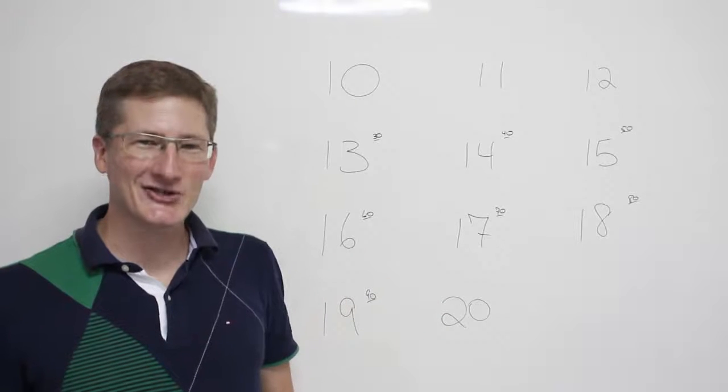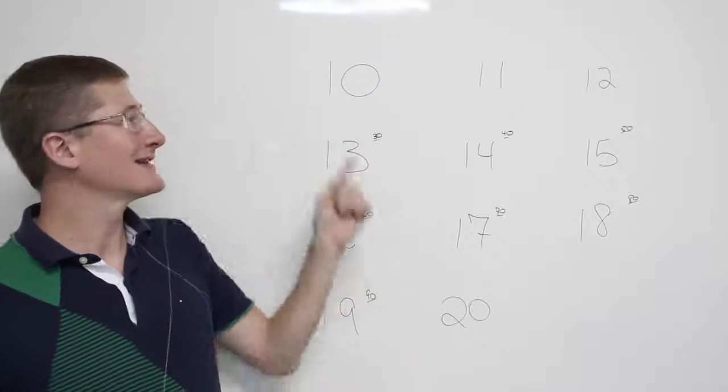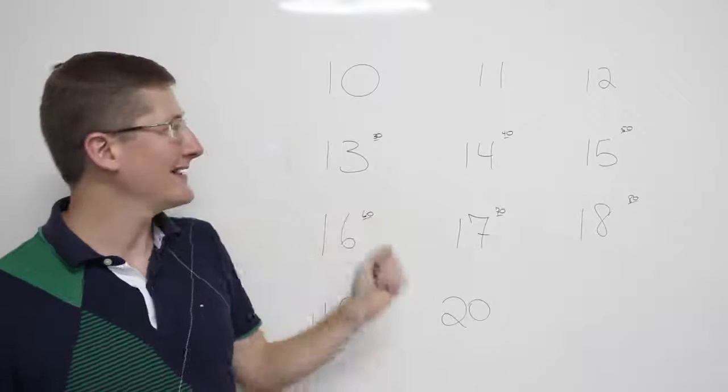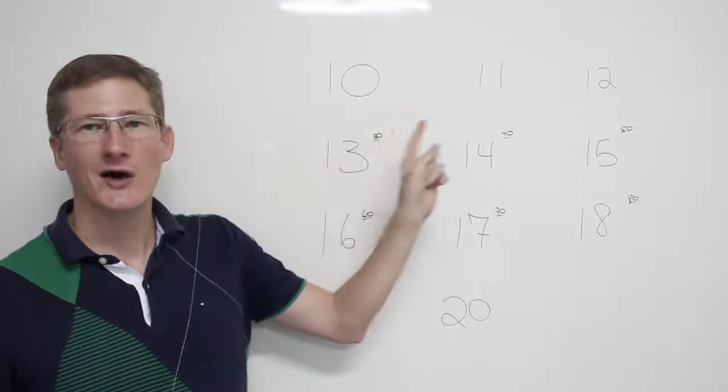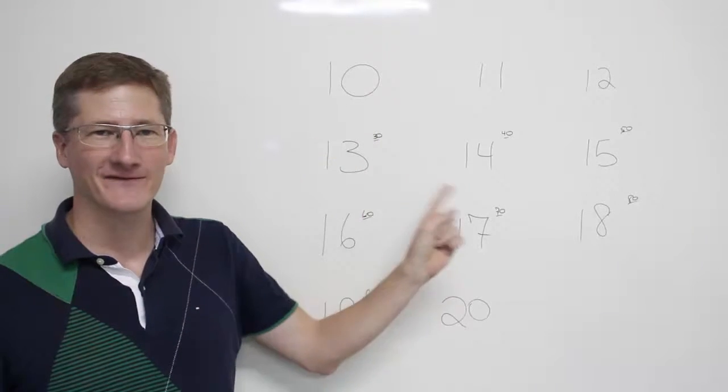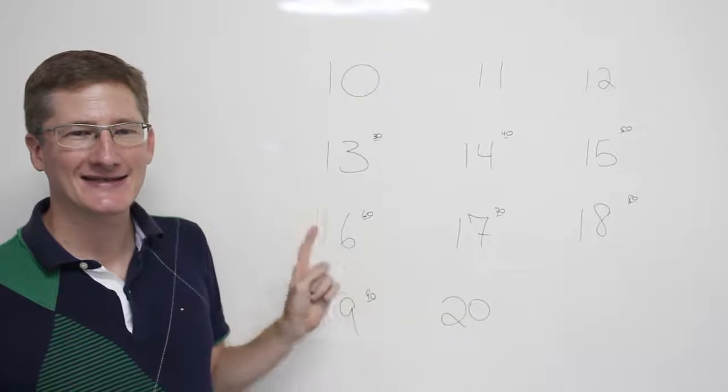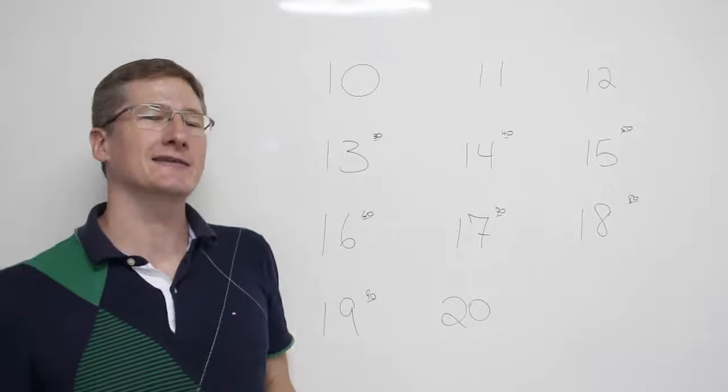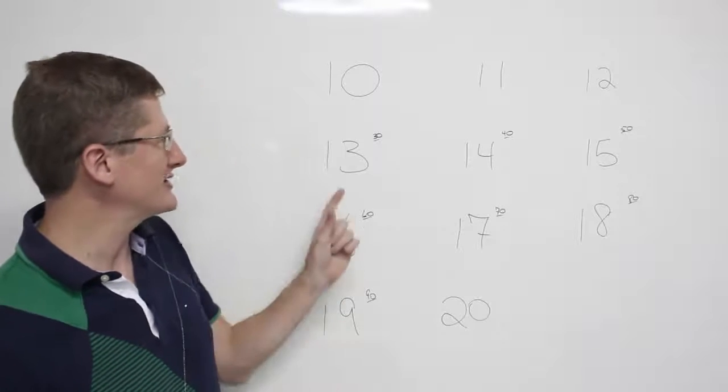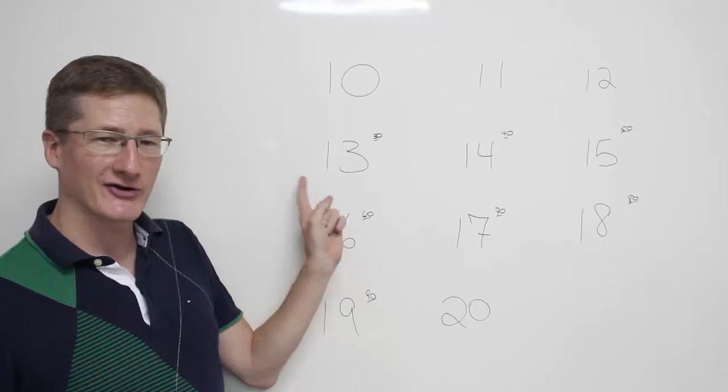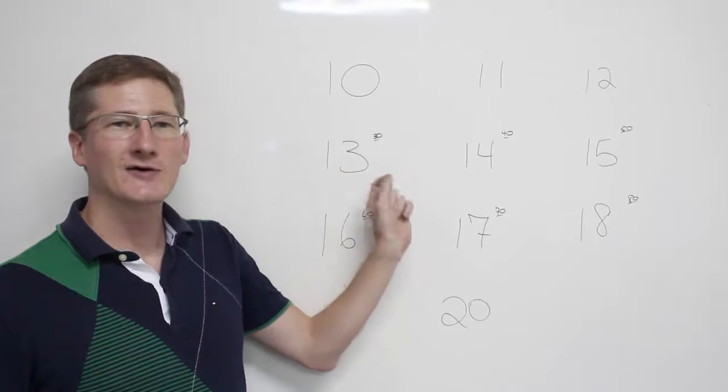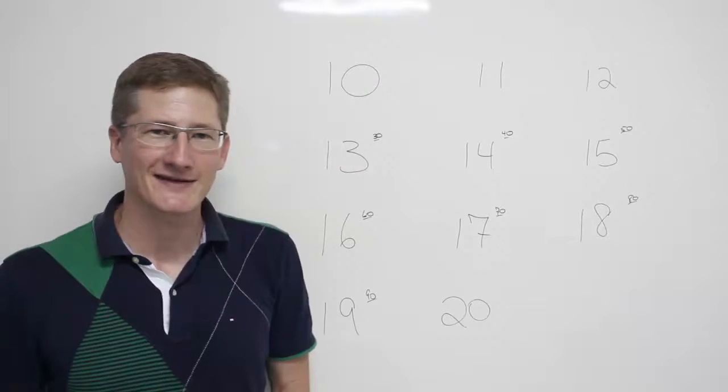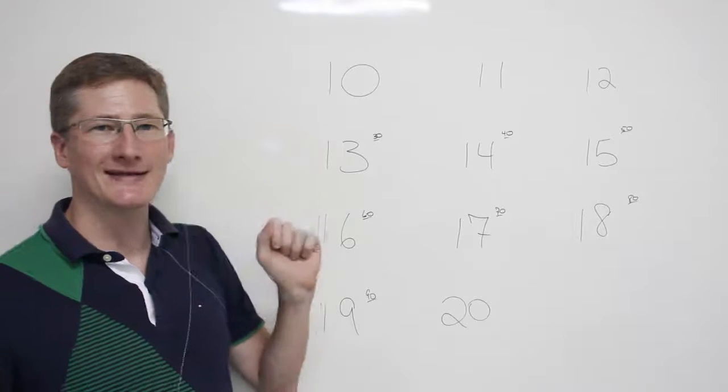Hey there English students, in this video we're going to look at the numbers 10 through 20: 10, 11, 12, 13, 14, 15, 16, 17, 18, 19, and 20. This will help you practice your pronunciation and differentiate between numbers like 13 and 30, and 14 and 40, which confuses a lot of students. So let's go ahead and practice.